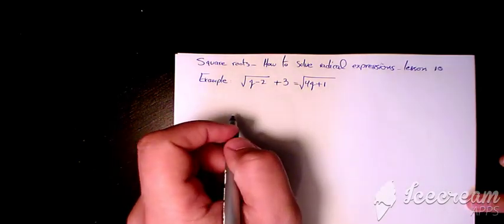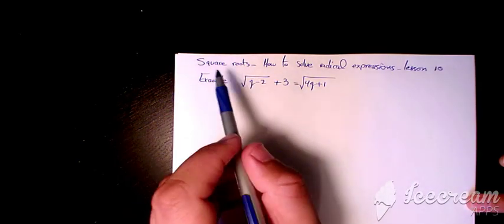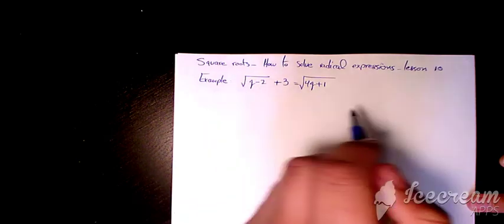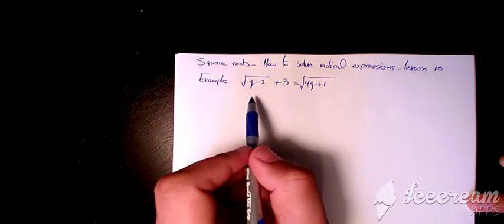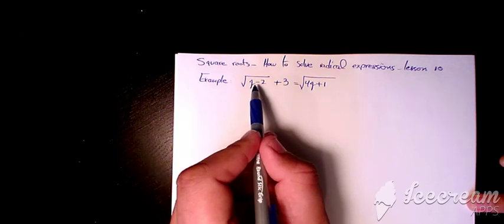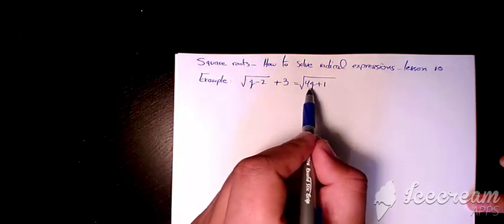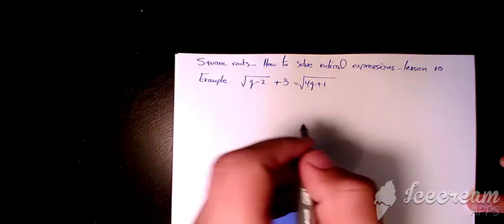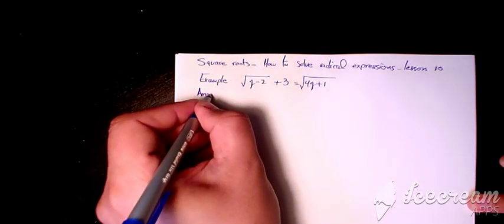What's up guys, this is Massy, welcome to my channel. In this video I want to show you some examples regarding solving radical expressions. The first example is: square root of (q minus 2) plus 3 equals 2 times square root of (4q plus 1).